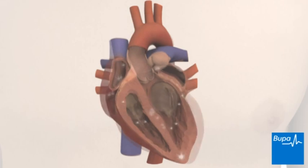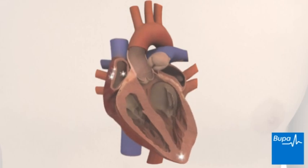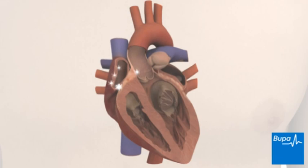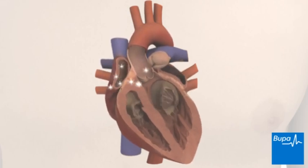In ventricular tachycardia, abnormal electrical impulses are produced in the lower chambers of the heart. This causes the heart to pump faster than normal. The ventricles may not have enough time to fill up with blood properly, so less blood is pumped around your body.